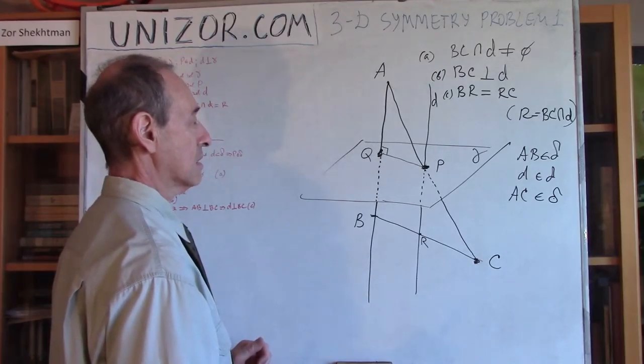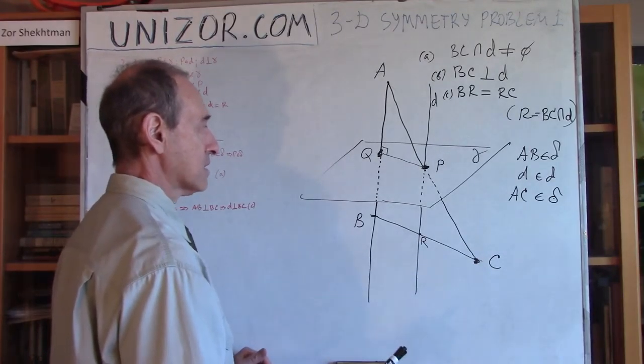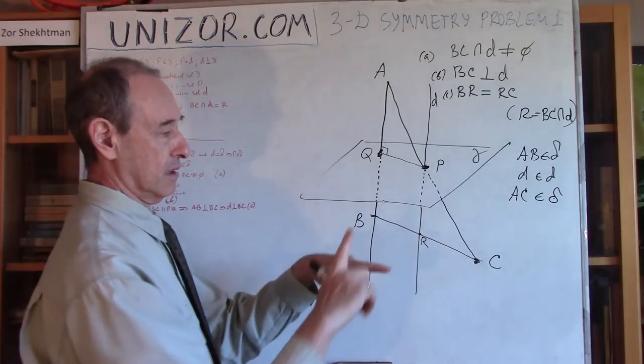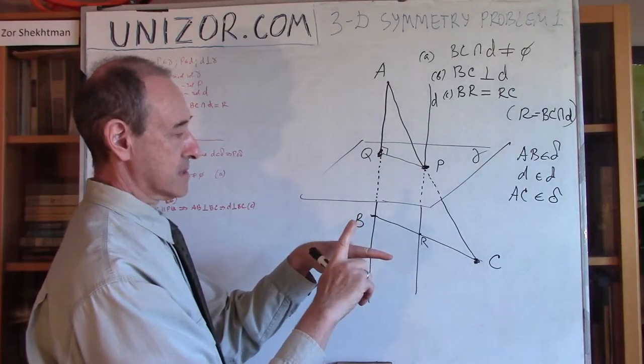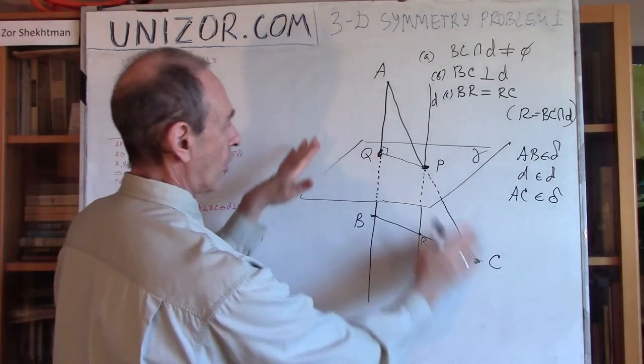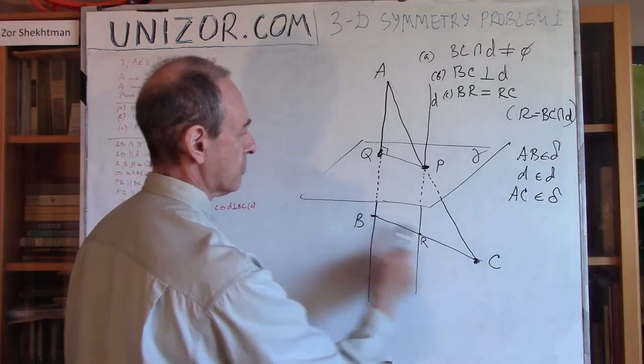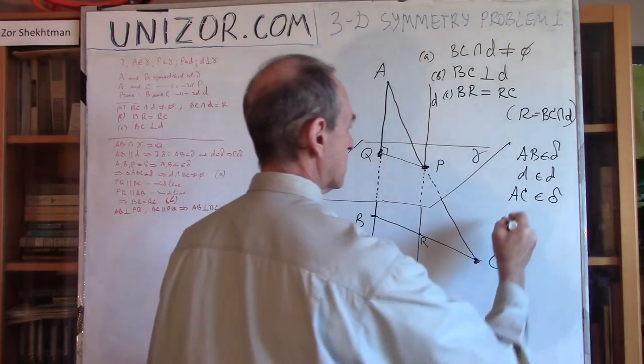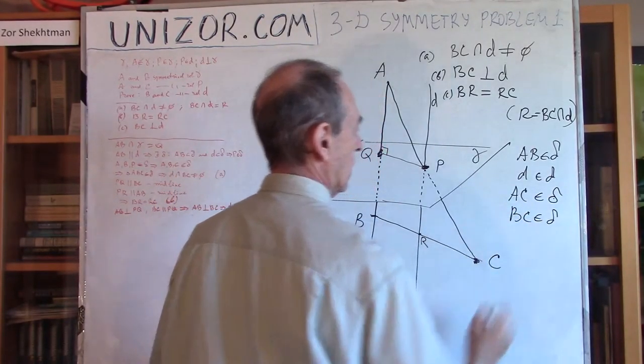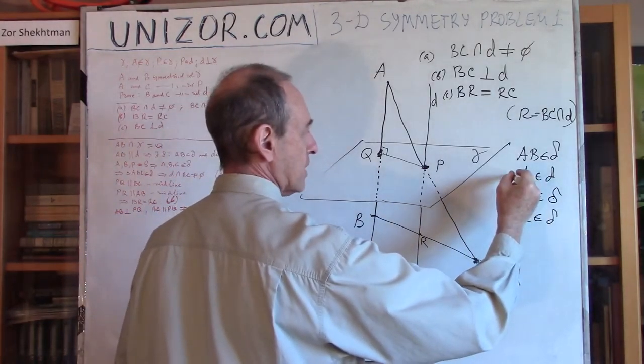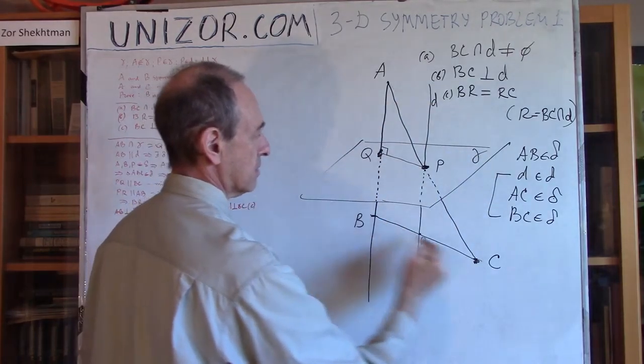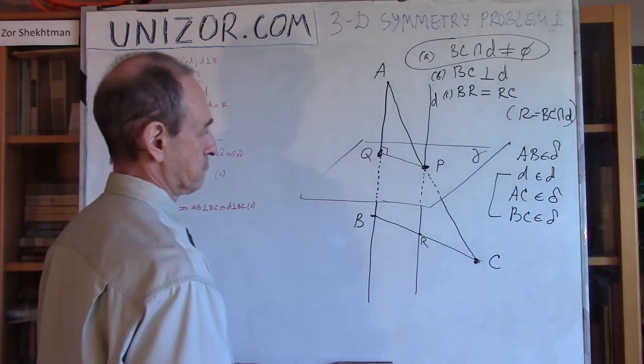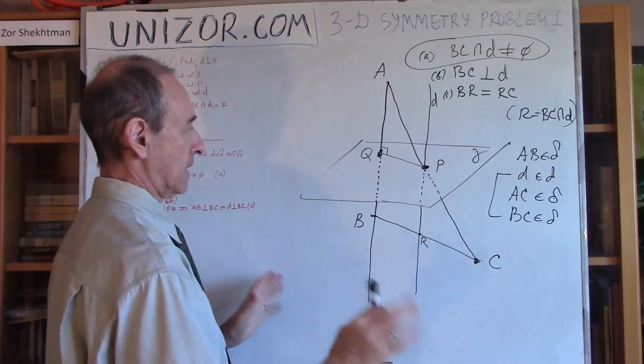So what I'm going to do right now is prove number one. Obviously, D and BC are not passing each other without intersection, because they all belong to the same plane. D belongs to the same plane as BC, since B belongs to the plane and C belongs to the same plane delta, so BC belongs to plane delta. From D belongs and BC belongs follows this: they must intersect. That has been proven.